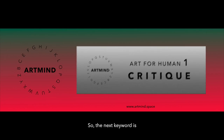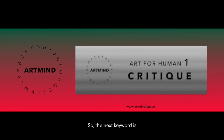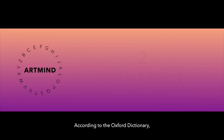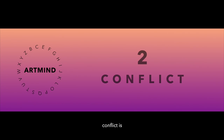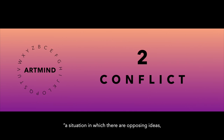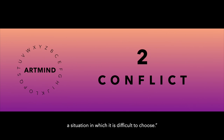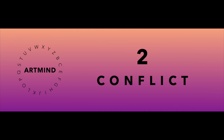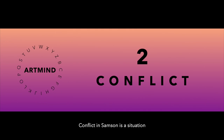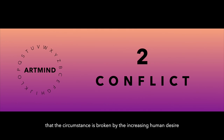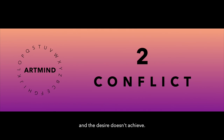So the next keyword is Conflict. According to the Oxford Dictionary, Conflict is a situation in which there are opposing ideas, opinions, feelings, or wishes — a situation in which it is difficult to choose. Conflict in Samson is a situation where the structure is broken by increasing human desire, and that desire never achieves its goal.